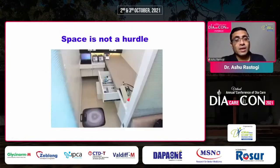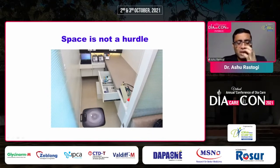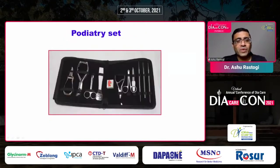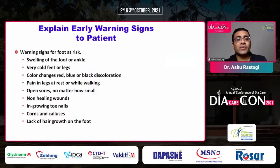Remember, space is not a hurdle — you can establish a foot lab in as small as 40 square feet and have all the necessary machines. A podiatry set for simple debridements, callus removal, and nail cutting helps in primary prevention of foot ulcers.